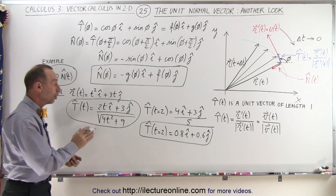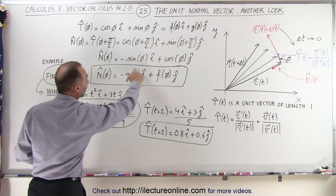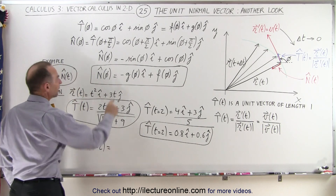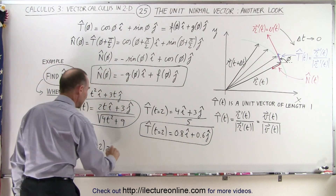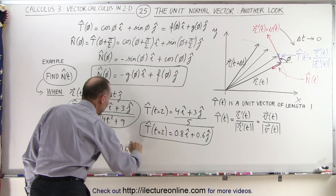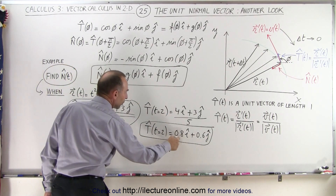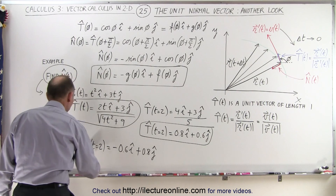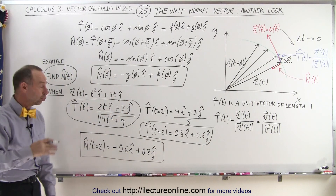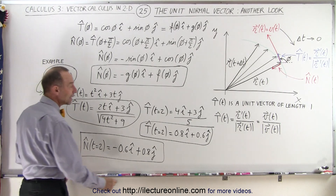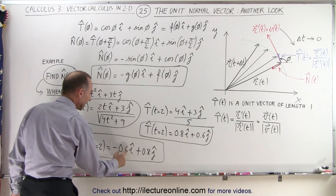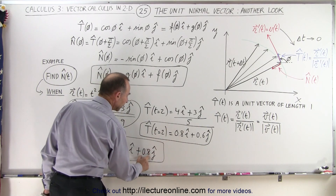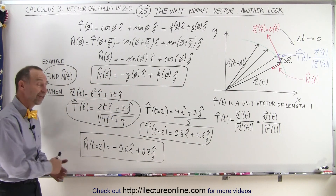Now the corresponding unit normal vector can be found using our technique. The unit normal vector at t=2 is found by taking the negative of the y-component of the tangent vector as the x-component — that gives negative 0.6 in the i-direction — and the x-component of the tangent vector becomes the y-component, giving plus 0.8 in the j-direction. That's how the unit normal vector is found from the unit tangent vector.